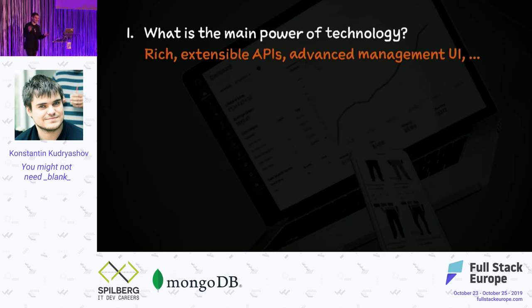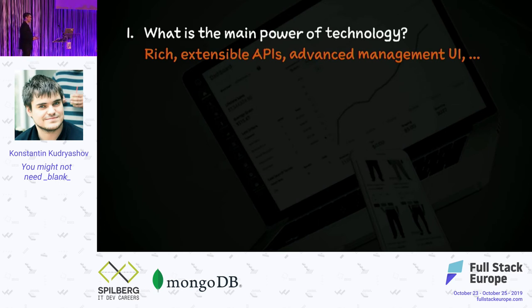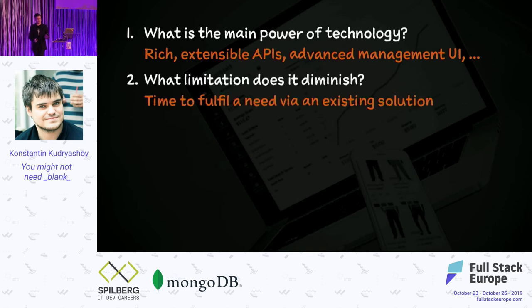What is the main power of commodity solutions? Read any CMS or Adobe e-commerce marketing material and they'll tell you: a rich, extensible API that allows you to extend from both internal and external sources, plus an advanced management UI that allows non-technical stakeholders to manage the system without your advice or oversight. What limitation do those technologies diminish? In my opinion it's quite simple: time to fulfill a need that has an existing solution. You have a need that has an existing solution — how long will it take you to get that solution into the hands of your users?